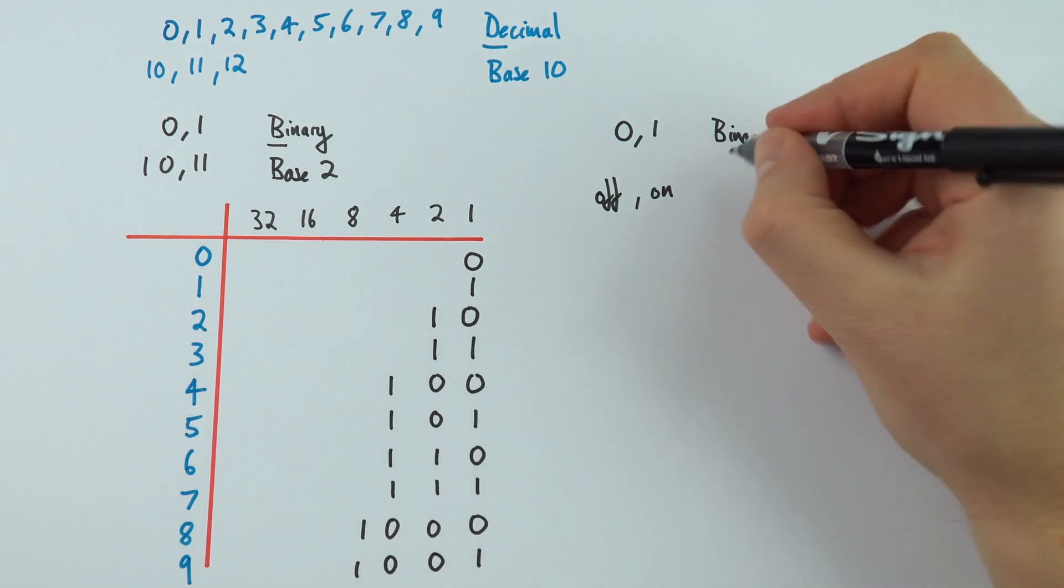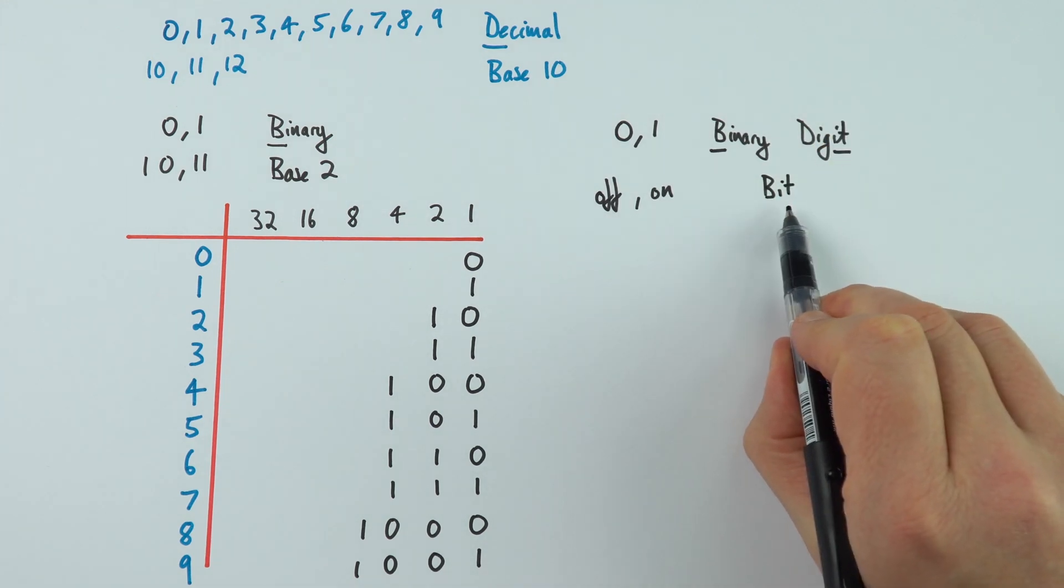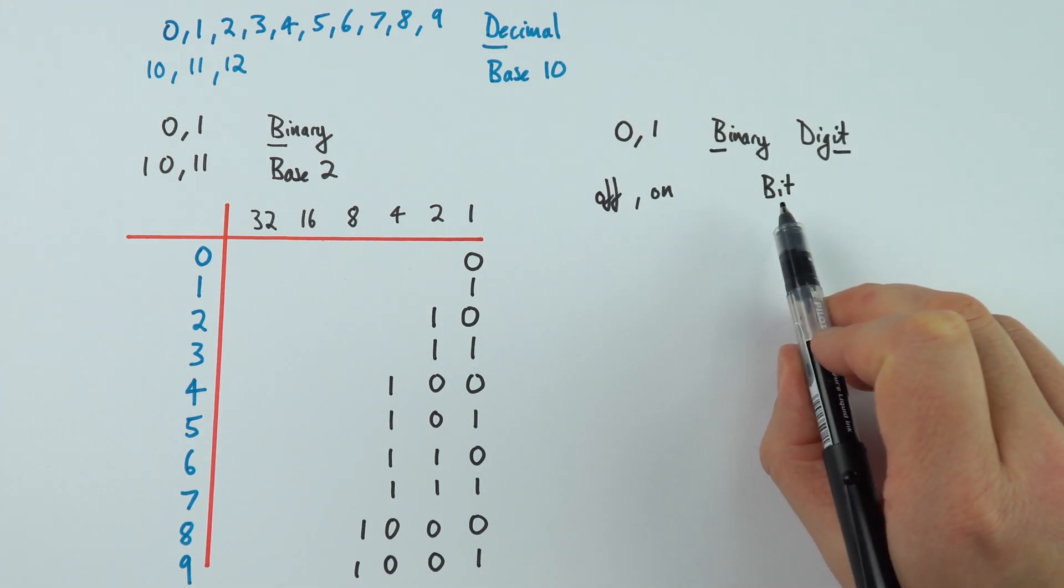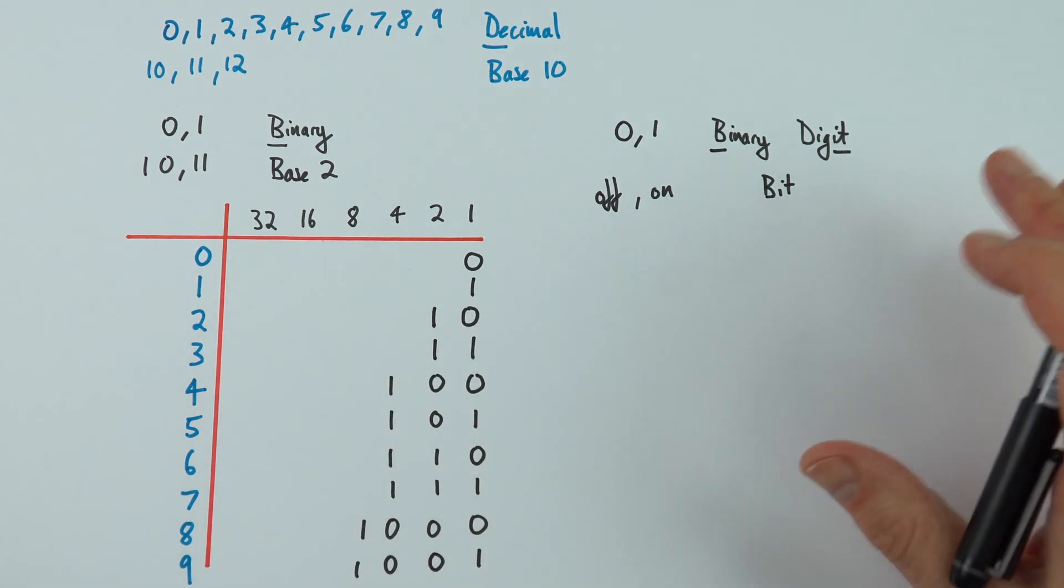And these binary digits, we can call these bits. So that stands for our binary digit. And we can use a different number of bits of information to represent different numbers.